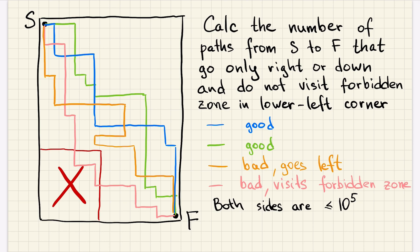We're asked to calculate the number of paths that go from upper left corner to lower right corner, only move down or right, and they do not visit this forbidden zone.